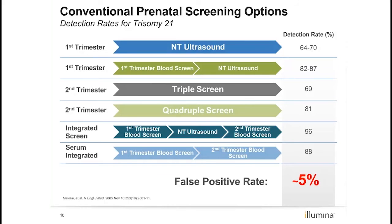This is a list of conventional non-invasive prenatal screening options from the updated ACOG practice bulletin from 2016. The detection rate for trisomy 21 (Down syndrome) ranges from 64 to 96 percent at a false positive rate of approximately 5 percent. These rates are even lower for trisomy 18. Rates can be improved with a combination of procedures at multiple stages in the pregnancy. For example, integrated screening involves a blood draw and ultrasound in the first trimester, followed by a blood draw between 15 and 20 weeks, with a detection rate of approximately 96 percent, though the patient must wait several weeks for their final risk results.